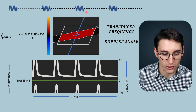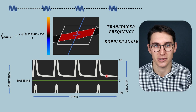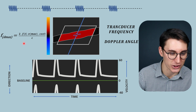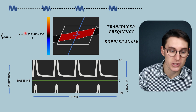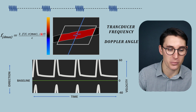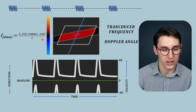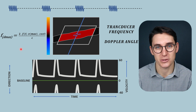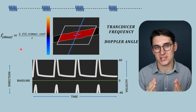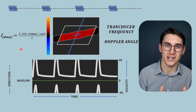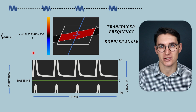What happens if we can no longer reduce the pulse repetition period but we still have aliasing? We can look at the Doppler equation, where the maximum Doppler shift that we can detect is determined by the transducer frequency, the velocity of blood being sampled, and the Doppler angle. The first thing we could do is reduce our transducer frequency. If the frequency of the pulses we are sending into the tissues is lower, the amount of Doppler shift will be less, and ultimately we will be able to measure more velocity with a set pulse repetition frequency.